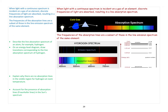Absorption spectrum is a little bit the opposite. If you've done chemistry, you've probably already seen absorption spectrum in the context of atomic absorption spectroscopy. When light with a continuous spectrum is incident on the gas of an element, discrete frequencies of light are absorbed, resulting in a line absorption spectrum. If we take white light with all the colours and shine it through a cold gas or vapour, we will see the continuous spectrum but with narrow dark bands missing.